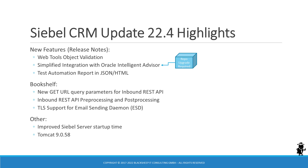Siebel Web Tools makes another leap towards 100% parity with its older sibling, Siebel Tools. In 22.4 and later, developers can run object validation from the comfort of their browser. The integration with Oracle Intelligent Advisor, formerly known as Oracle Policy Automation, has been simplified. The release notes reveal enhancements in report generation for the Siebel Test Automation Module. The email sending daemon, part of the Siebel email marketing module, now supports Transport Layer Security. Along with an update for Tomcat to version 9.0.58, your Siebel servers will start up faster with the 22.4 update.